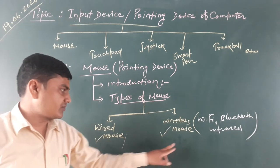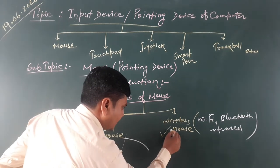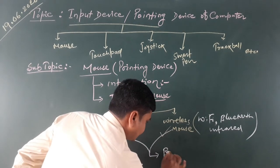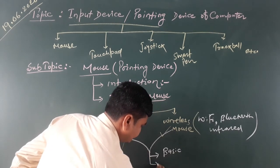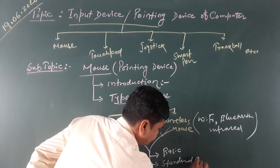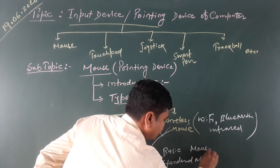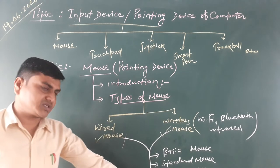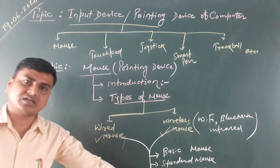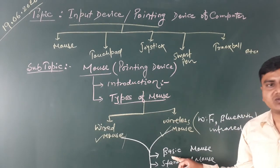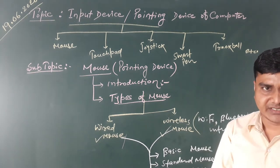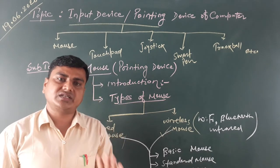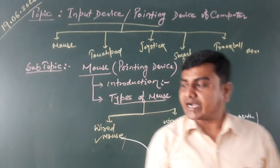Combining both categories, wired and wireless mouse can be further classified into three types: basic mouse, standard mouse, and optical mouse. The basic mouse had only two buttons, typically appearing in black or white color, used for basic functions.